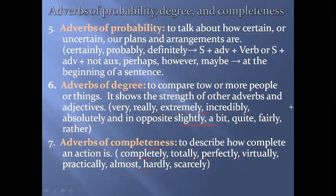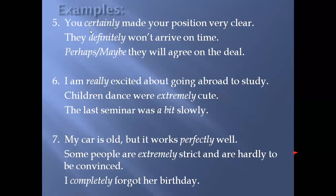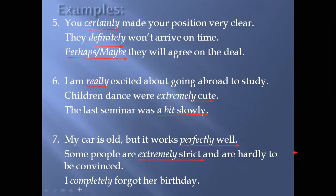This section is easier than the first. Examples: 'You certainly made your position very clear.' 'They definitely won't arrive on time.' 'Perhaps' and 'maybe' can begin a sentence. Also: 'I'm really excited,' 'extremely cute,' 'a bit slowly,' 'it works perfectly well,' 'extremely strict,' 'completely forgot.' These words describe degree, probability, and completeness.